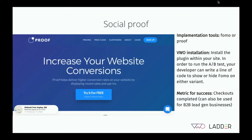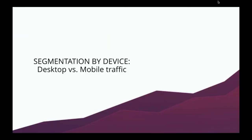Another great option for eCommerce and other businesses is using social proof apps like Proof or FOMO. These display notifications that pull from real customer data — for instance, 'Deborah recently signed up for Proof.' For eCommerce, you can pull in a customer's name, location, and product they bought. Similar to the free shipping bar, you implement the plugin on your site, then through VWO show or hide it in different variants. Rather than just throwing things on your site without measuring them, you get a clear learning on whether seeing that actually helped push people to make a purchase or sign up.